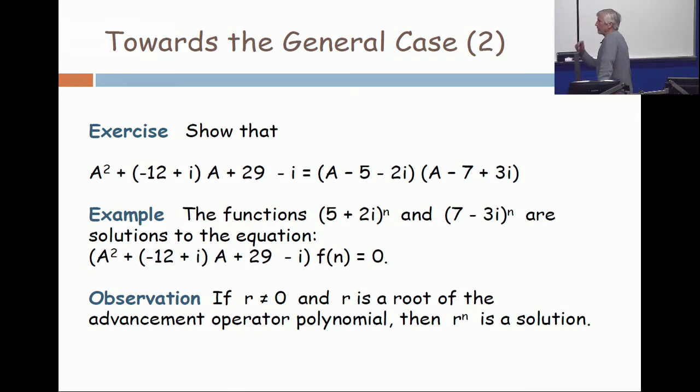Look at this statement. Take the right hand product. You see the A minus 5 minus 2i. If that's the factor, what's the root? 5 plus 2i. And if I have A minus 7 plus 3i as the factor, then the root is 7 minus 3i.